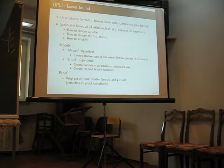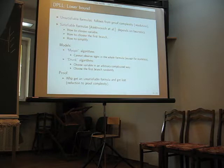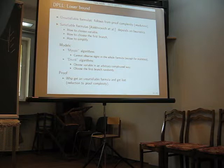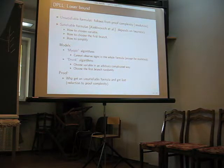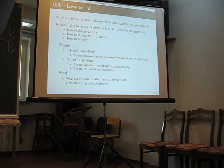Here, it would not be possible to prove a lower bound for an arbitrary DPLL algorithm, unless you are able to prove P equals NP, because if you have a complicated heuristic that chooses the first branch to consider, then it will bring you just to the satisfying assignment. So, you have to specify a model which would cover as many present algorithms as possible, but at the same time, it would not just give you P equals NP.